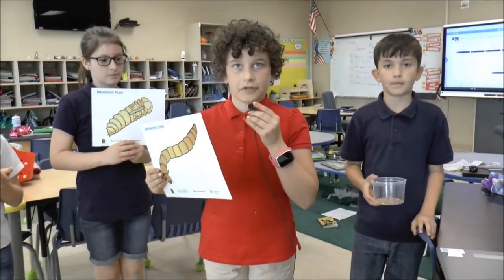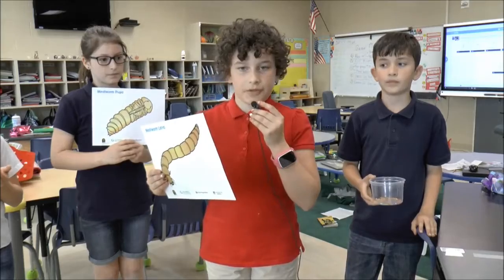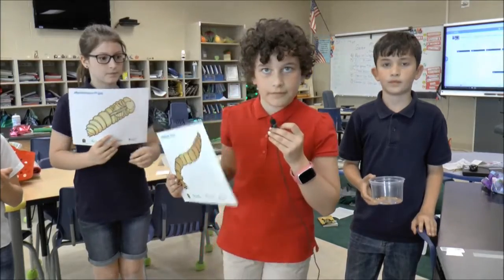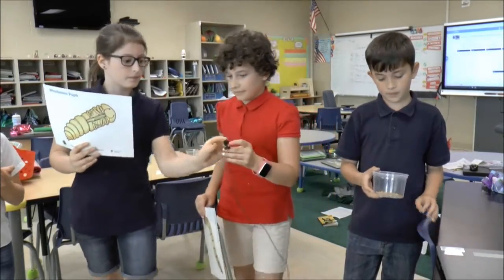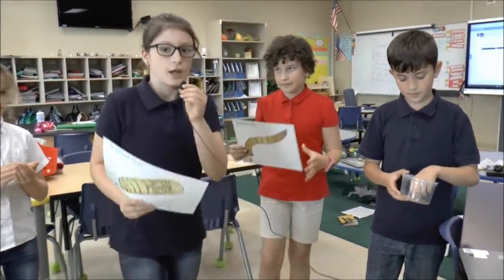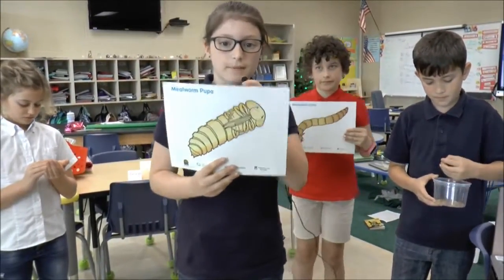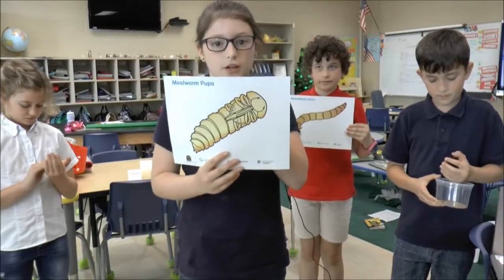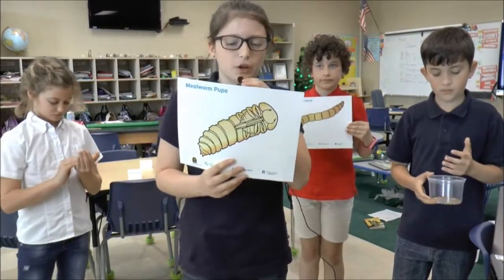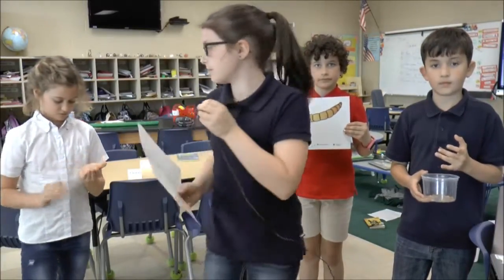Mealworms are the larvae of beetles and then go into the pupa state. You know when a butterfly goes in a cocoon, mealworms go in a cocoon too, except they're called pupa.